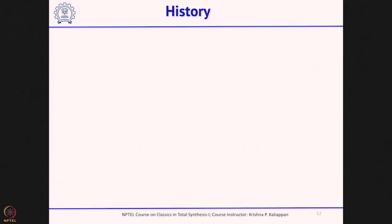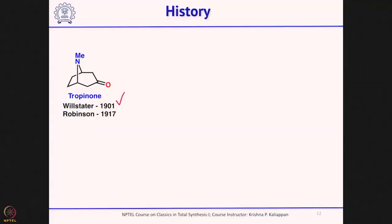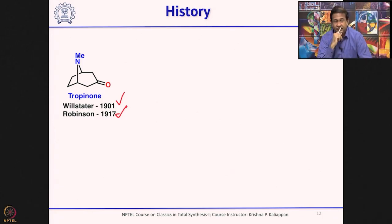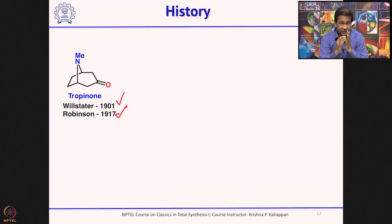In the 20th century, the first molecule reported was tropinone. Tropinone is an alkaloid, and in 1901 Willstätter reported the synthesis of tropinone. Sixteen years later, Sir Robert Robinson also reported its synthesis. Interestingly, Robinson's synthesis involved two important concepts: one is green chemistry, because all the reactions were done in water, and two, he also used a multi-component reaction. These two important concepts — green chemistry and multi-component reaction — were introduced almost 100 years ago in the synthesis of tropinone.